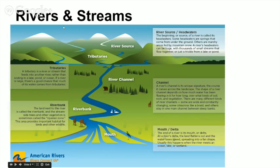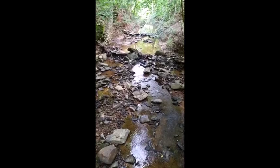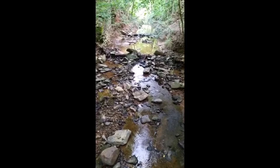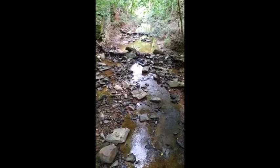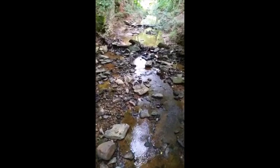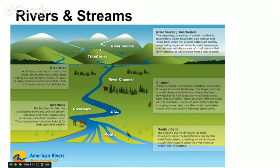So you have tributaries and river sources, usually up in the mountains of an area. This is a tributary to the Eno River. A tributary is just a smaller creek or stream that feeds into a larger body of water. A lot of tributaries that feed into one large body of water we call a watershed. And then you have the main channel and then you have the riverbank or floodplain, which is actually more of a wetland than a river.